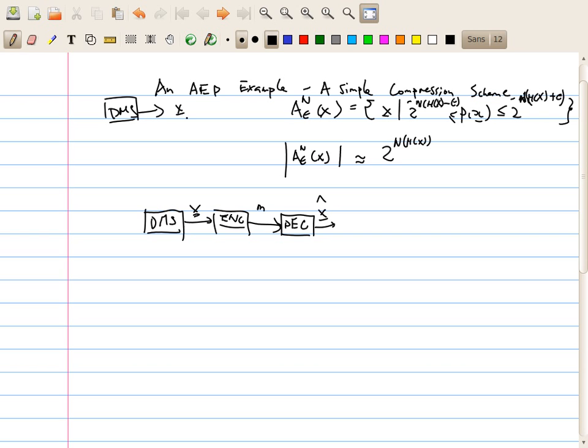for any sequence drawn from a discrete memoryless source, the sequence will be typical. What we mean by typical is basically the probability of the sequence, the line inside this range 2 to minus n H(x) minus epsilon to 2 to minus n H(x) plus epsilon.